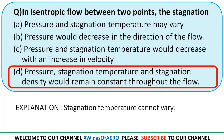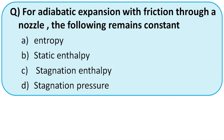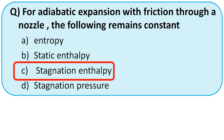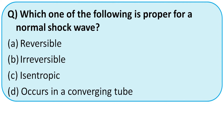For adiabatic expansion with friction through a nozzle, which remains constant — entropy, static enthalpy, stagnation enthalpy, or stagnation temperature? For adiabatic expansion with friction through a nozzle, stagnation enthalpy always remains the same. So the right option is option C.